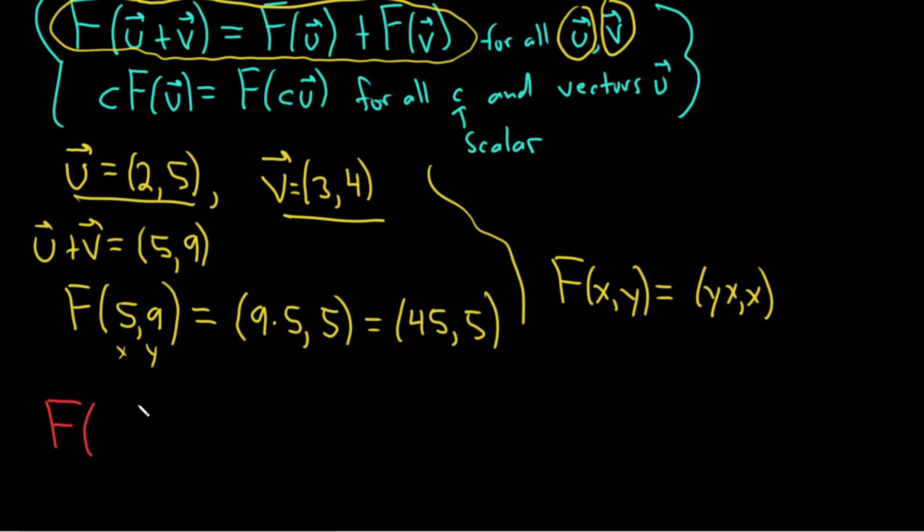So F of u. And F of u is going to be F of 2, 5. And again, the formula is yx, x. So it would be 5 times 2. And then x is 2, so 2. So it would be 10, 2.